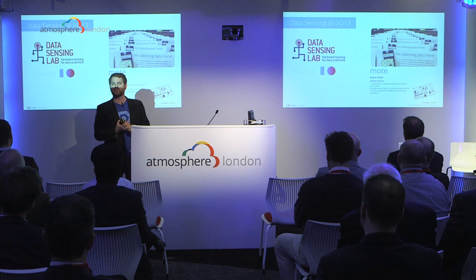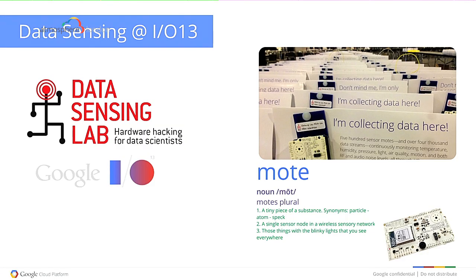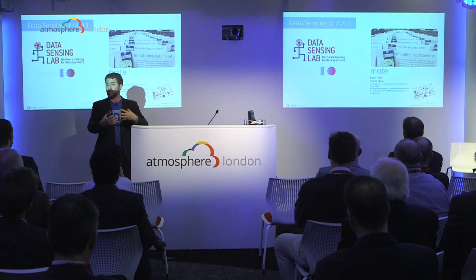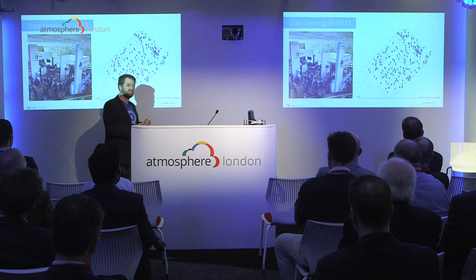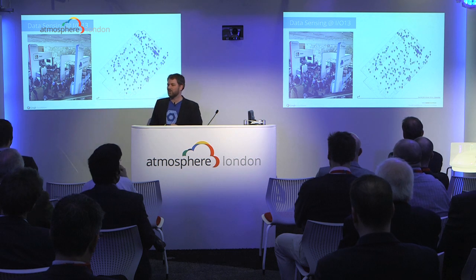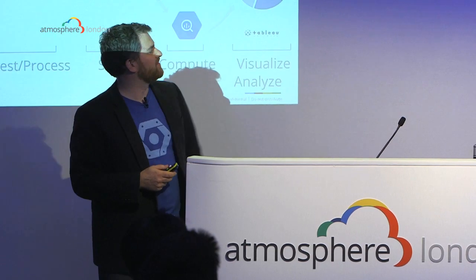I wanted to share something we did at Google I/O last year, 2013. They had a very interesting experiment going on with data sensing — thinking about what happens if we start instrumenting an event like Google I/O. These are 'moats' — quite cheap devices, maybe tens of dollars, fully built, connecting wirelessly. We put them all around the event and they were measuring things like noise volumes, footfall, and air quality — all sorts of little scientific measurement instruments.